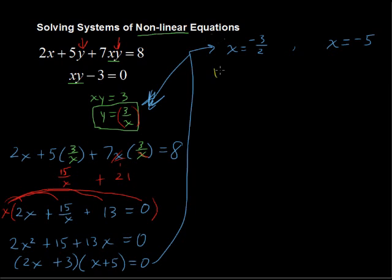When x equals negative 3 halves, we have y equals 3 over negative 3 halves. So dividing a fraction, that gives you y equals negative 2. In the other scenario, when x equals negative 5, then we have y equals 3 over negative 5, so y is just negative 3 fifths.